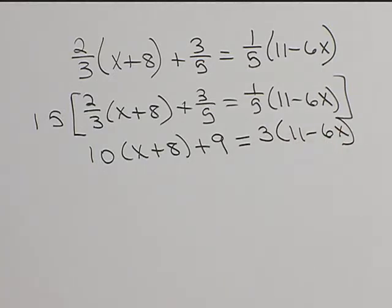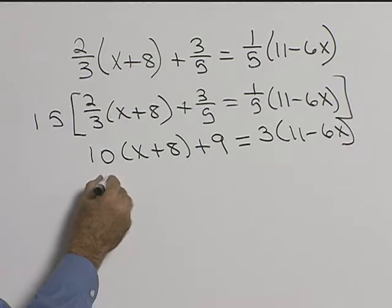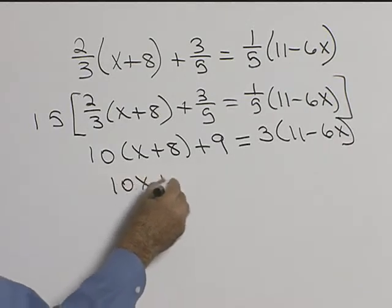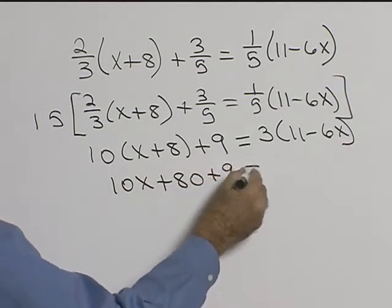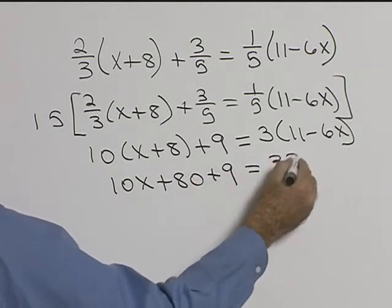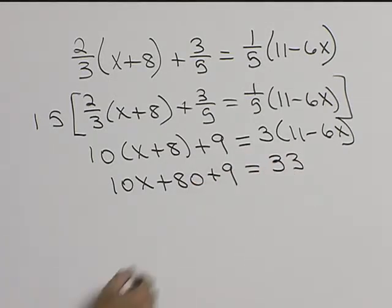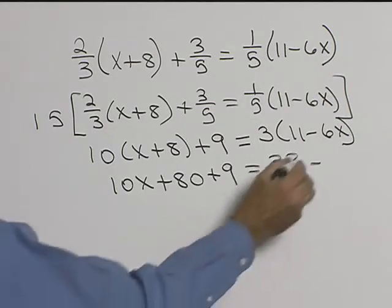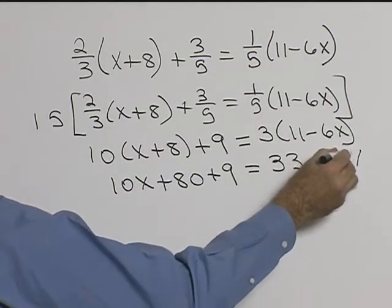Now we're ready to clear parentheses. If we distribute our 10, we get 10x plus 80 plus 9 equals, distributing our 3, we get 3 times 11 is 33 minus 3 times negative 6x will be negative 18x.